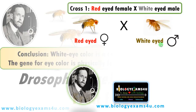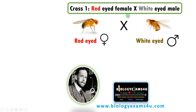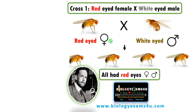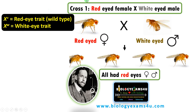Let us begin with the first cross. He crossed a red-eyed female with the famous white-eyed male mutant. As expected, all offspring had red eyes — both female and male. To understand better, let us write down the genotype. X⁺ represents the red-eyed wild-type trait, and X^W represents the white-eyed trait. So the red-eyed female is homozygous X⁺X⁺, and the white-eyed male is X^W Y, since males have only one X chromosome.